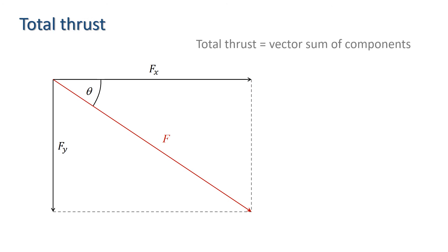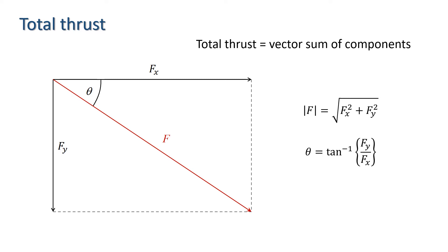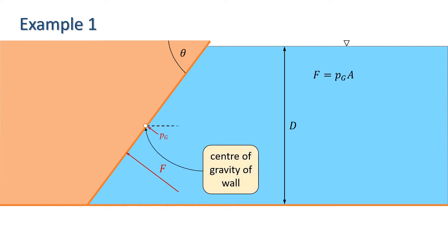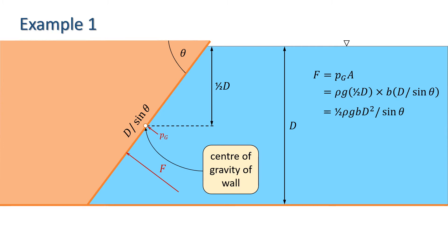Finally, we saw that the total thrust is simply the vector sum of the two components. Let's look first at a wall which is a plane surface at an angle theta to the horizontal, with water sitting below the surface of the wall. Since the wall is a plane surface, we can calculate the force directly. The magnitude of the force equals the pressure at the centre of gravity of the wall, which is at half d below the surface, times the area of the wall. The length of the wall is d over sine theta, thus F equals rho g times one-half d times b times d over sine theta, where b is the width of the wall, giving us F equals one-half rho g b d squared over sine theta.